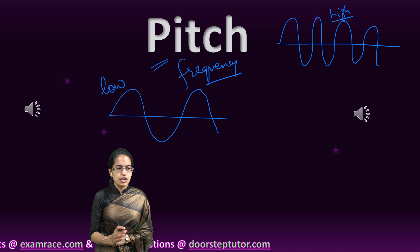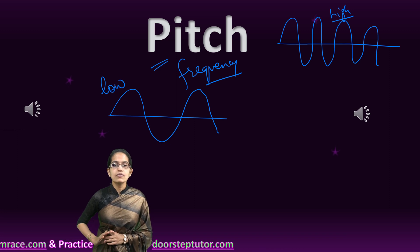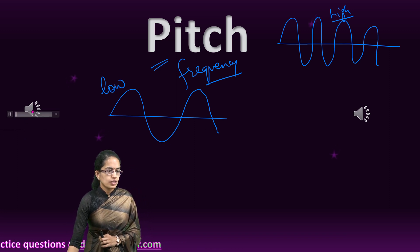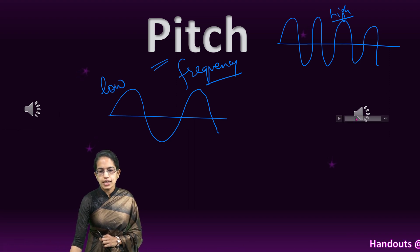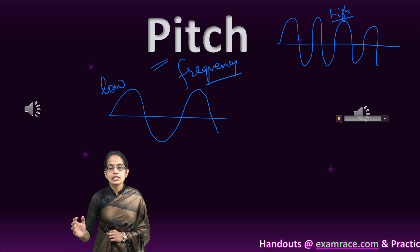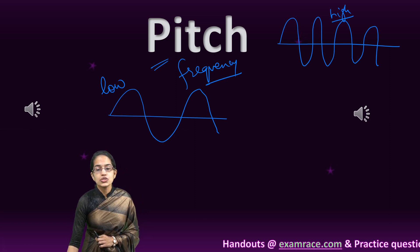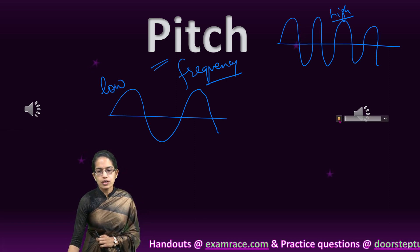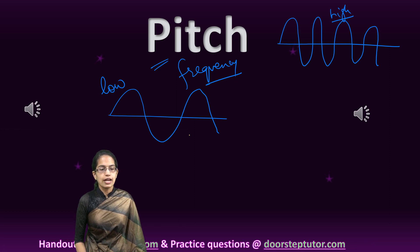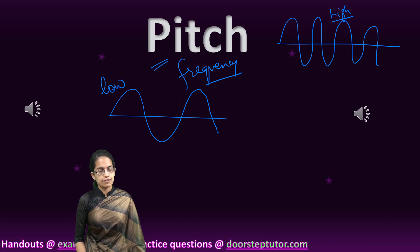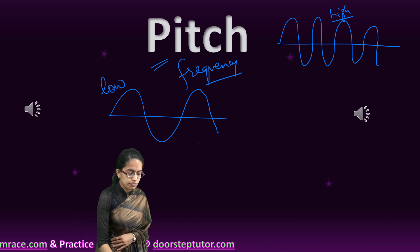Let's play each of those sounds and identify whether it is a low pitch or a high pitch sound. The first is a subtle sound, so it is a low pitch sound. In contrast, the next sound is a shrill sound, and therefore it is a high pitch sound. So that was about the pitch.